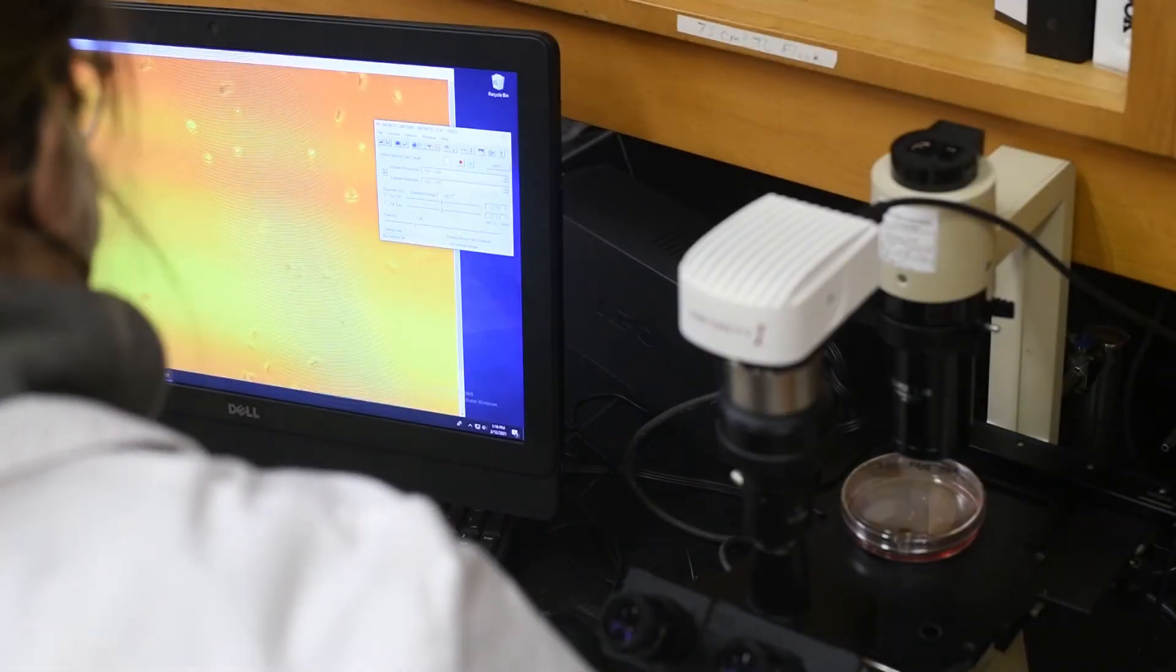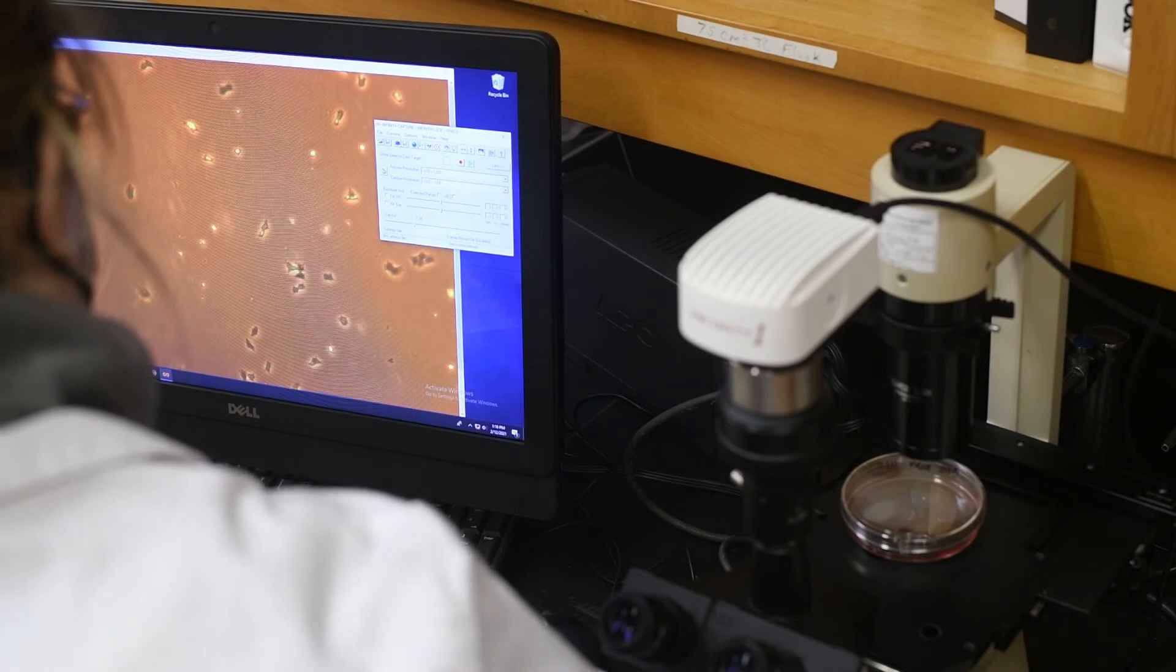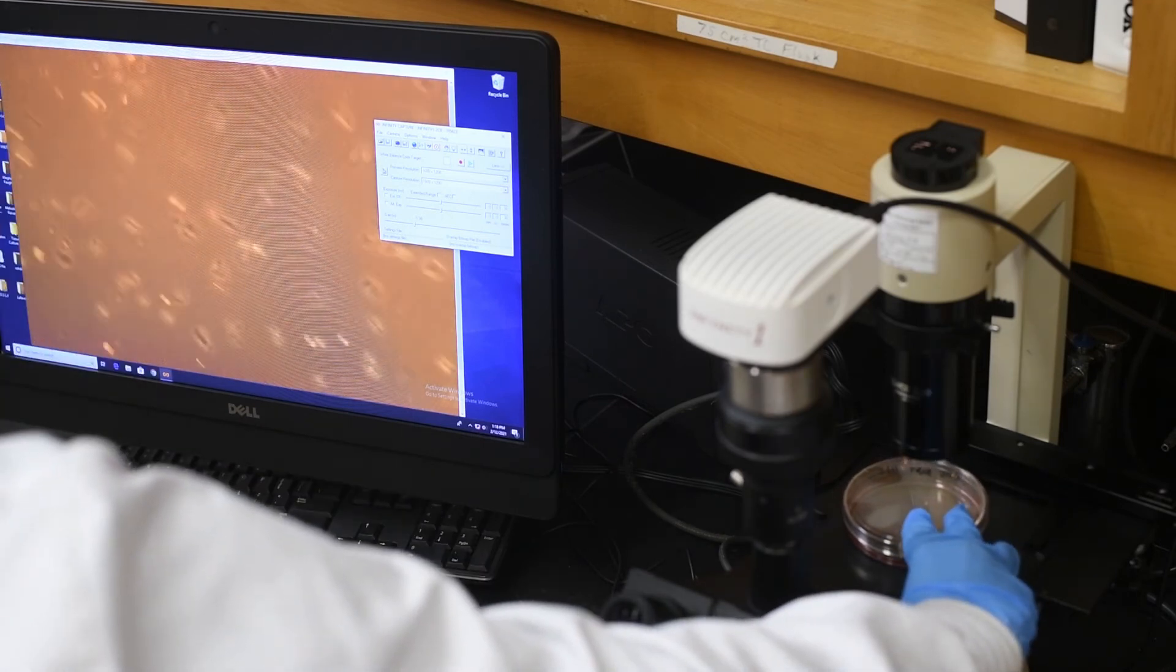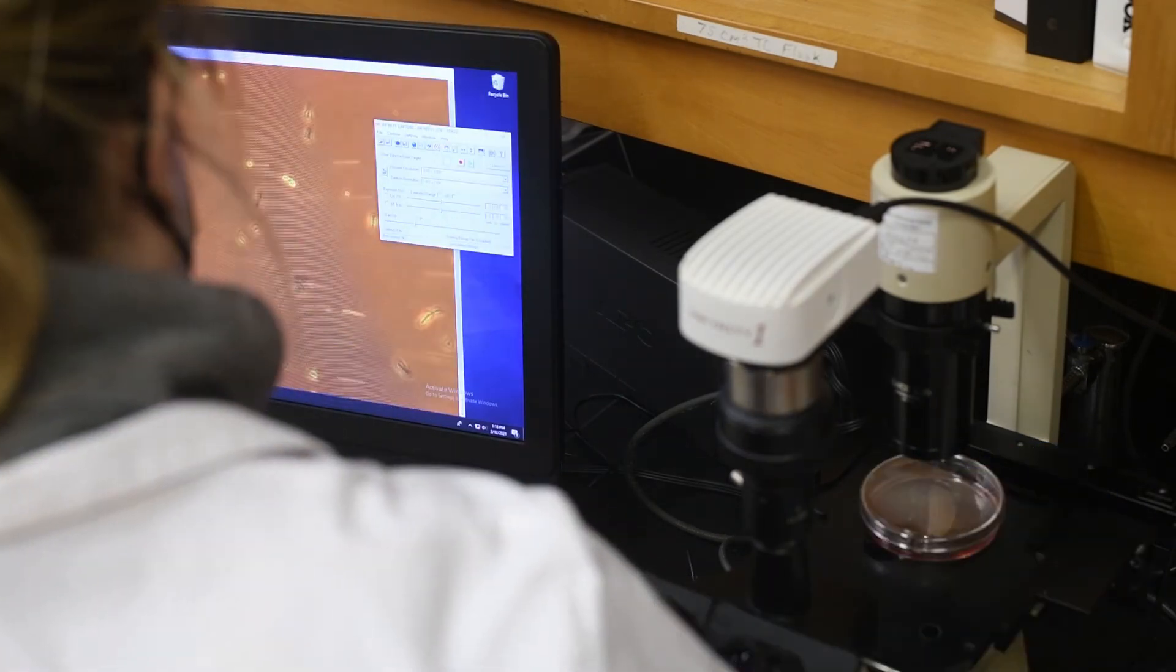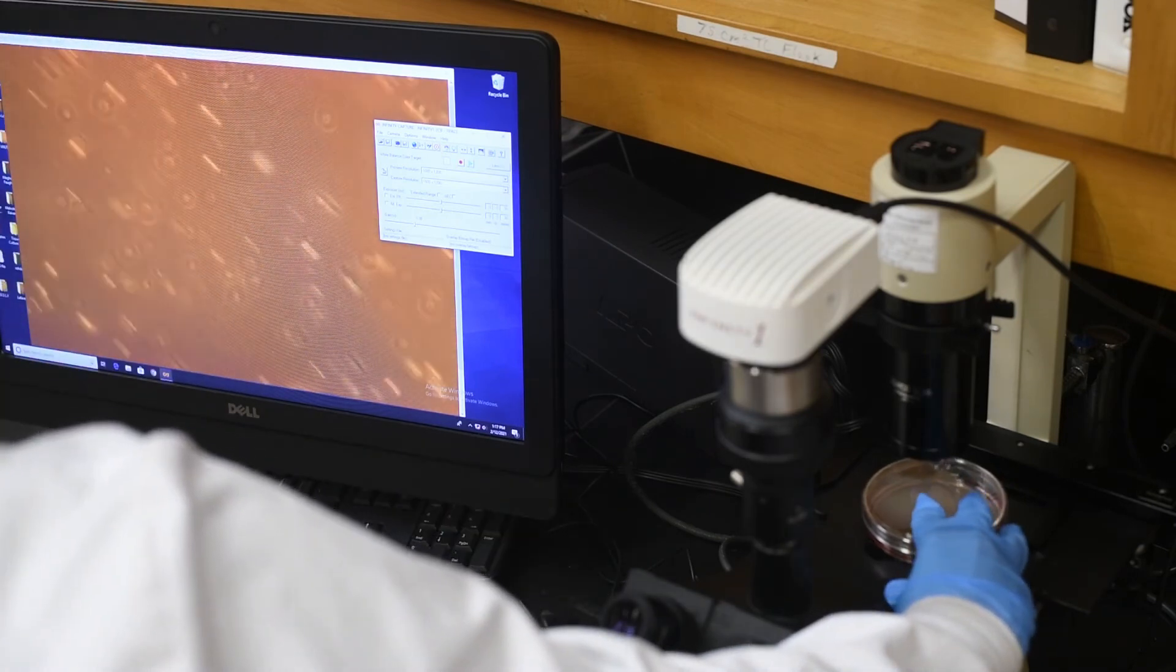After 24 hours have passed and the cells have adhered to the plate, remove the media and replace with 10 milliliters of fresh media. This ensures that all DMSO has been removed.